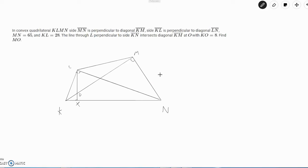The problem reads: in convex quadrilateral KLMN, side MN is perpendicular to diagonal KM, side KL is perpendicular to diagonal LN, MN equals 65 and KL equals 28. The line through L perpendicular to side KN intersects diagonal KM at O with KO equals 8. Find MO.